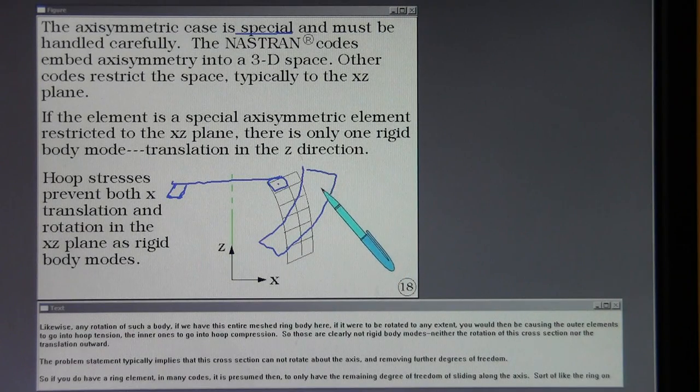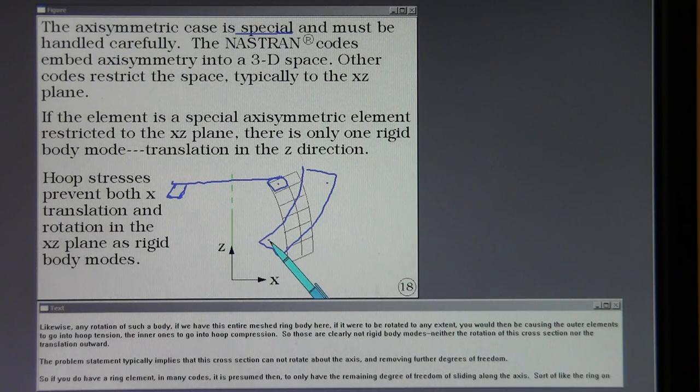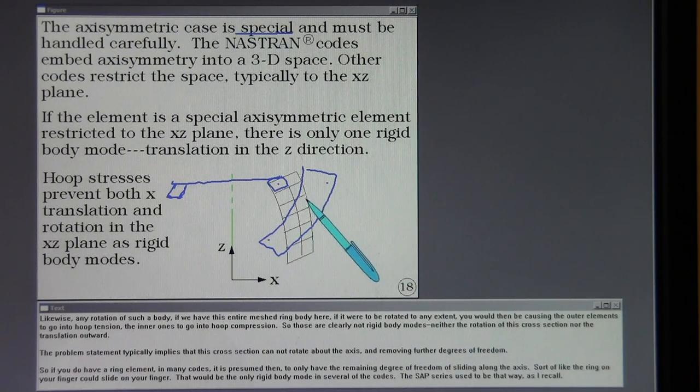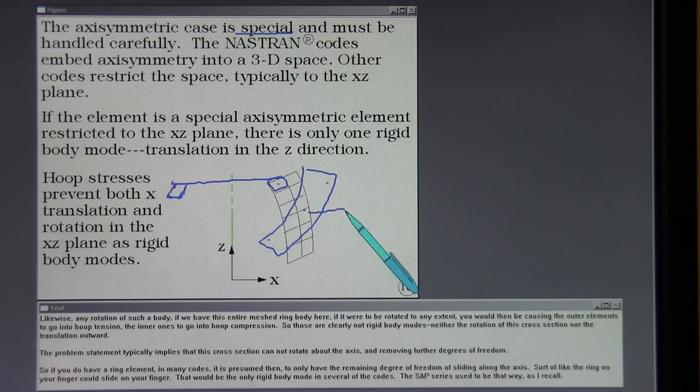You would then be causing the outer elements to go into hoop tension, the inner ones to go into hoop compression. So those are clearly not rigid body modes, neither the rotation of this cross section nor the translation outward.